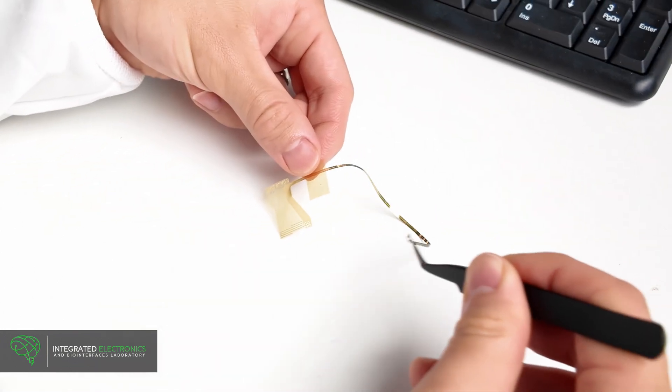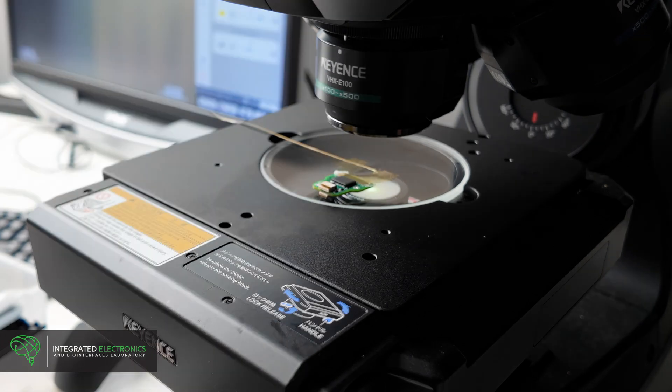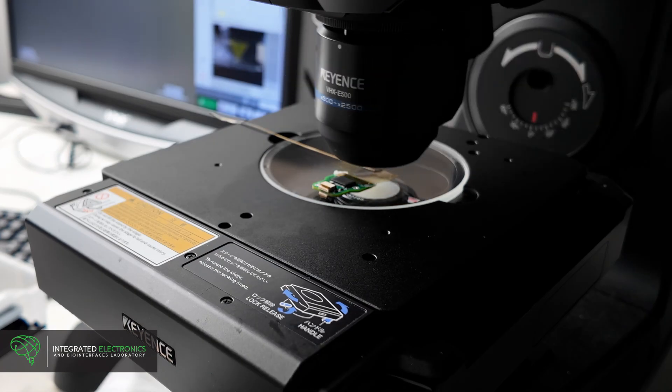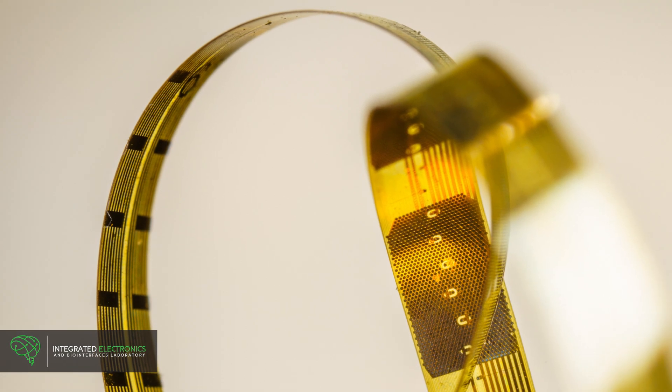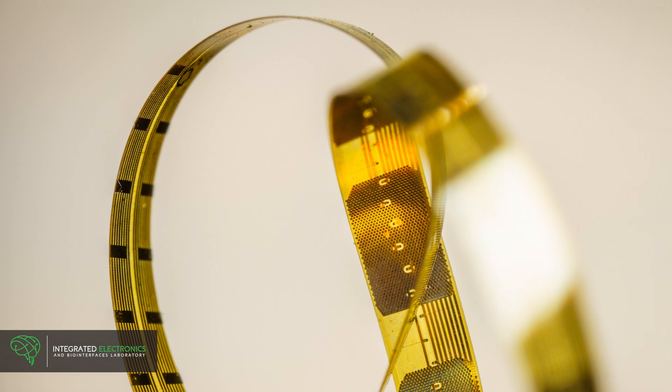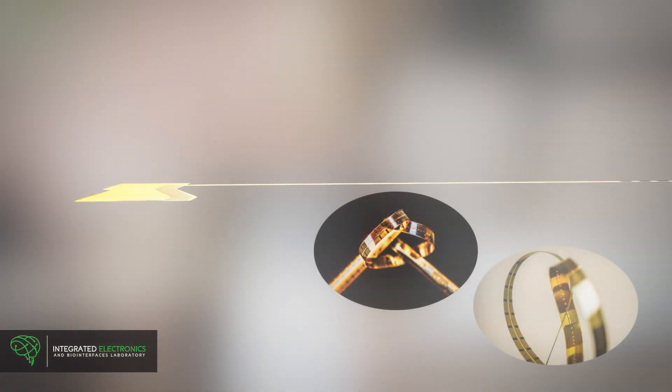It is ultra-thin and flexible, with 128 micro-electrodes that record brain activity and 16 macro-electrodes that stimulate the brain with tiny pulses of electric current. The electrode is incredibly thin, just one-fifth the width of a human hair.